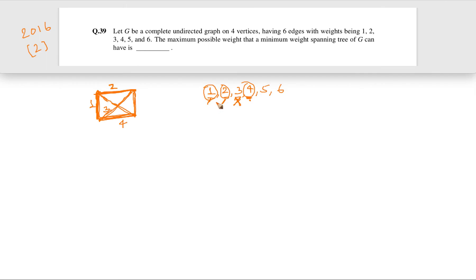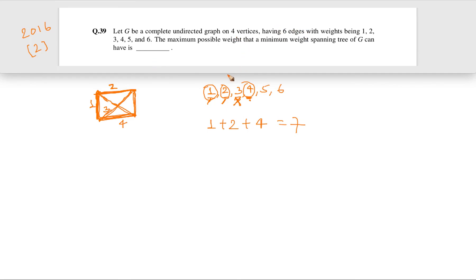So the MST in this case uses edges with weights 1, 2, and 4. The weight of the spanning tree is 1+2+4 = 7. This is the maximum possible weight that a minimum spanning tree can have in a complete graph with four vertices and edge weights 1 through 6. The answer is 7.